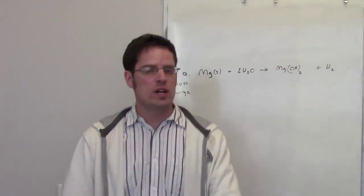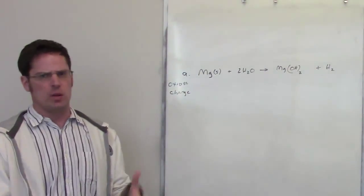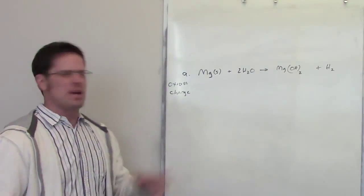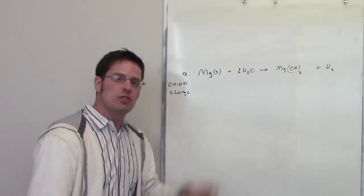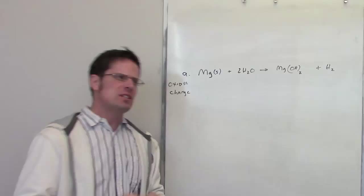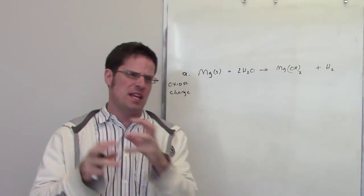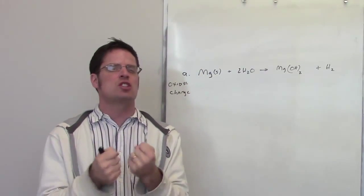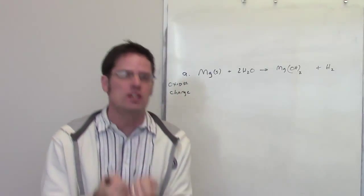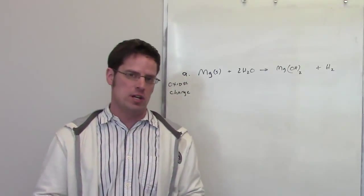This question is asking us which element is oxidized and which is reduced in the following set of reactions. I'm going to pick a couple of them. Looking at this first example, in order to be able to determine what is oxidized and what is reduced, we have to start by assigning every single element an oxidation number.